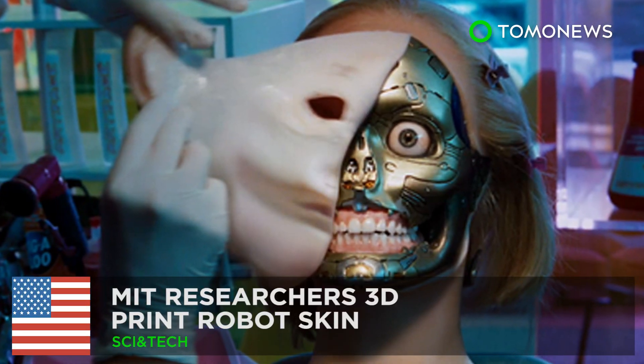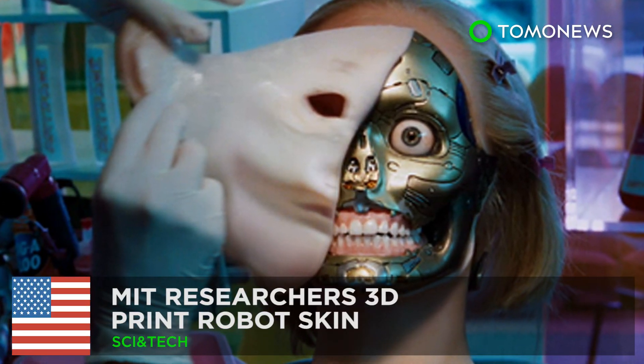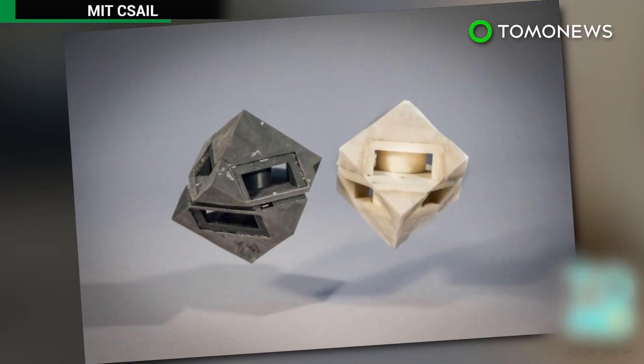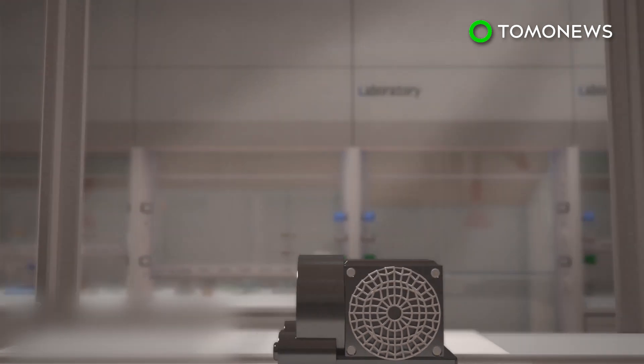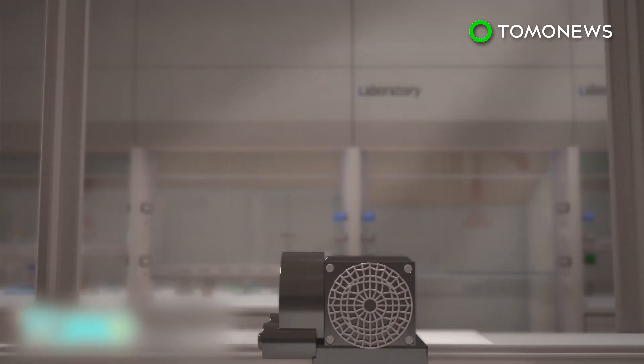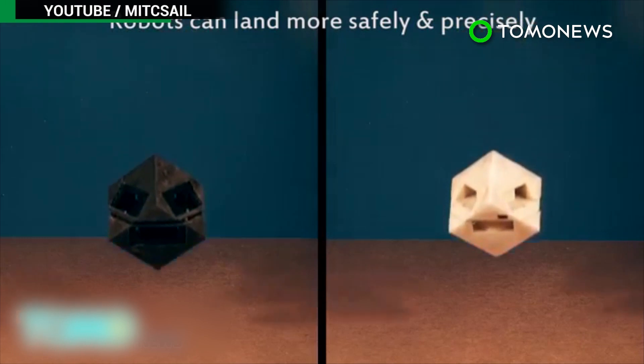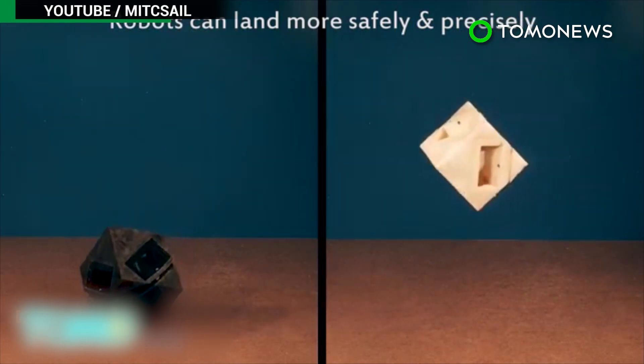MIT researchers create 3D-printed robot skin. These robot cubes are wearing MIT's latest creation. Researchers at MIT have developed 3D-printed skin for robots. The skin protects robots and helps make their movements more precise.